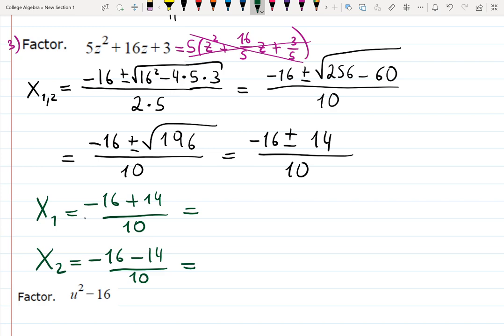Carefully calculate. So, like this, you can understand that this is minus 16, not minus the whole fraction. Minus 16 plus 14, that's minus 2 over 10, and that's minus 1 fifth. Minus 16 minus 14, that's minus 30 over 10, and that's minus 3. Put it in the box, and that's what we're going to put in the factored form.